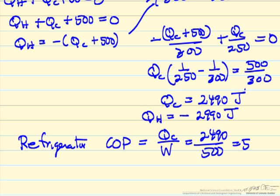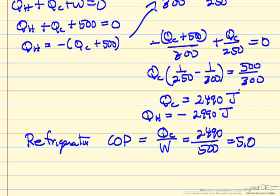In this case, 2490 over 500, that's about 5. So with 500 joules of work, we can transfer 2490 joules of heat out of something.